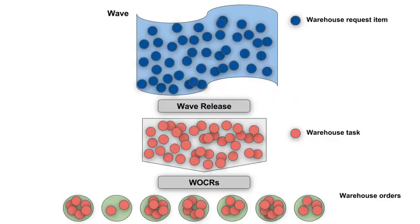We split our wave now into smaller work packages, which should later be assigned to resources, having the characteristics which are required to execute the tasks within the specific work package. In SAP EWM, we call these executable work packages warehouse orders and they are created based on the warehouse tasks, which in turn are created once our wave is being released.